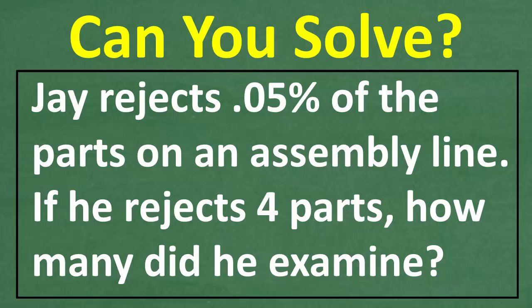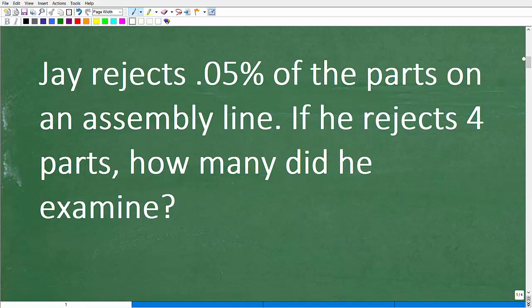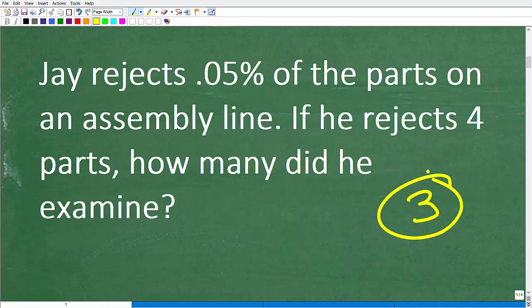If he rejects four parts, how many total parts did he examine? The first thing that we want to consider is that we are dealing with a math word problem. So what should you do? Well, maybe we'll just read the problem one time and then just kind of start doing stuff. No, you don't want to do that. You always want to use the rule of three.